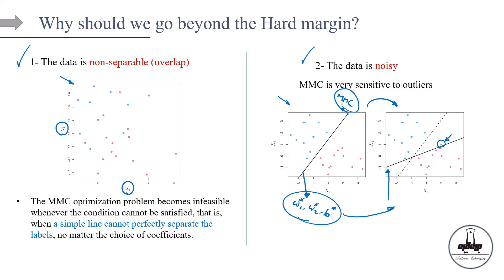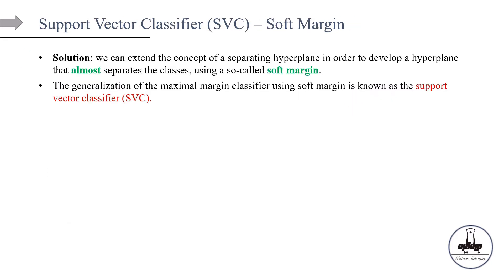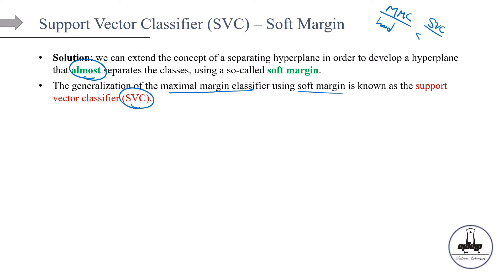The solution is to extend the concept of a separating hyperplane to develop a hyperplane that almost separates the classes — using a so-called soft margin. This generalization of the MMC using a soft margin is also known as the support vector classifier, SVC. MMC is used for hard margin; SVC is when we go from hard margin to soft margin.